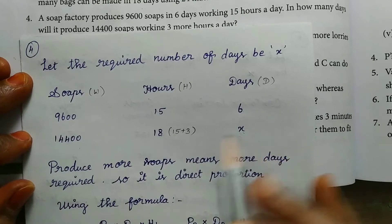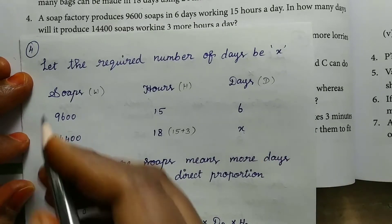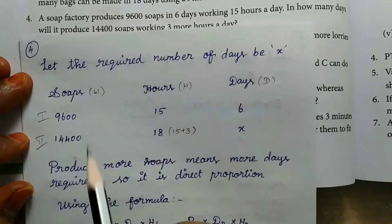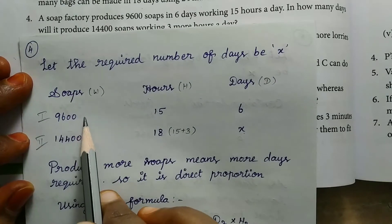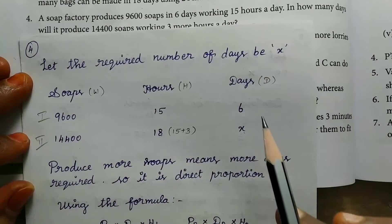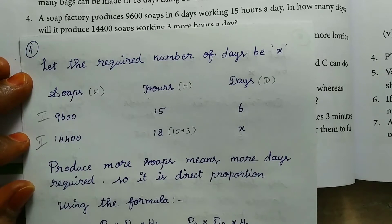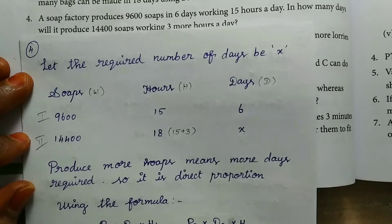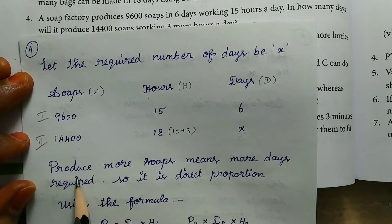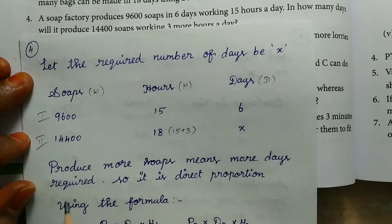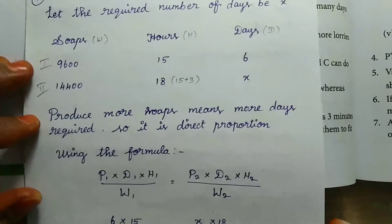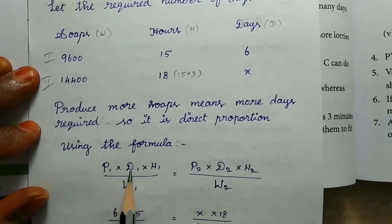Consider soaps and number of days, we compare. So soaps counting, first quantity, this is first one, this is second one. We compare, so number of days we increase. If you work more days, the variation is direct variation or direct proportion. Produce more soaps means more days required, so it is a direct proportion.